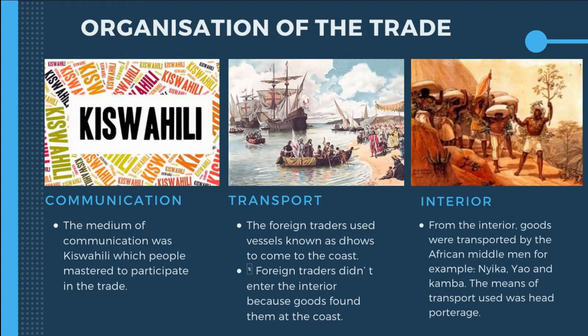Communication was a key part of the organization of this trade. Foreigners from Arabia and Africans spoke totally different languages, so the medium of communication became Kiswahili, which participants had to master to trade. Kiswahili developed out of this trade — it contains vocabulary from both African and Arab languages, arising from the intermarriage and contact between Arabs and Africans, and it served as the medium of communication in the Indian Ocean trade.